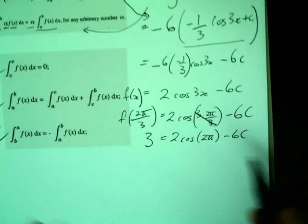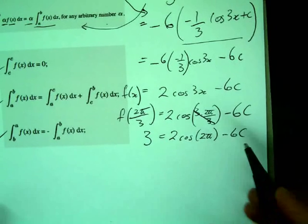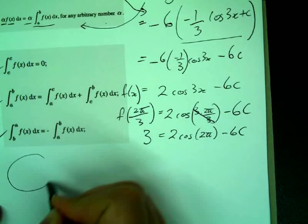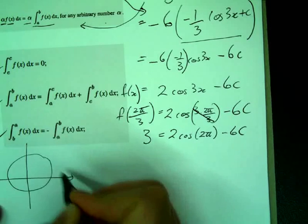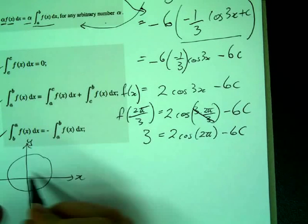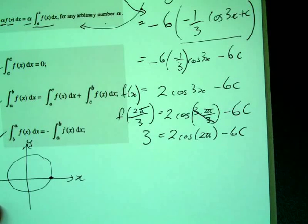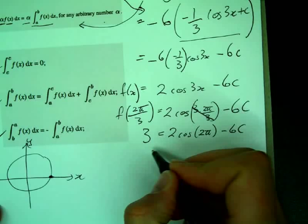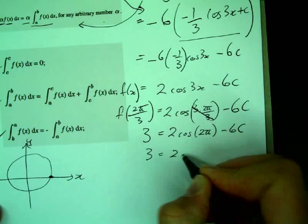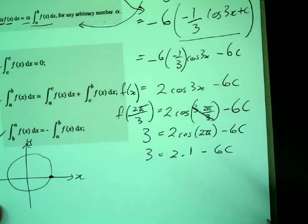And what do I want to find out? c. Now remember your unit circle. Unit circle looks like this, where the x is the cosine and the y is the sine. 2π is here. What's the x value there? 1, yeah? So I get 3 equals 2 times 1 take 6c.